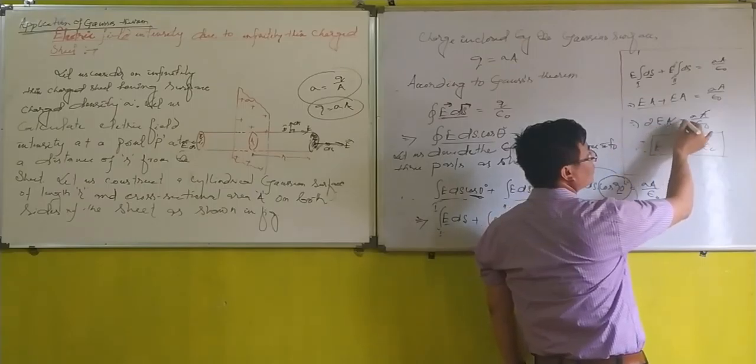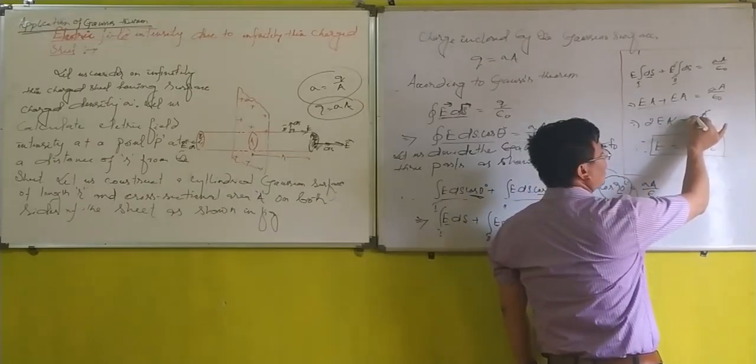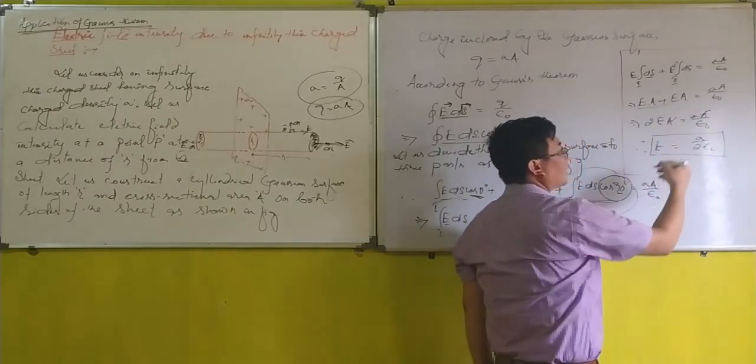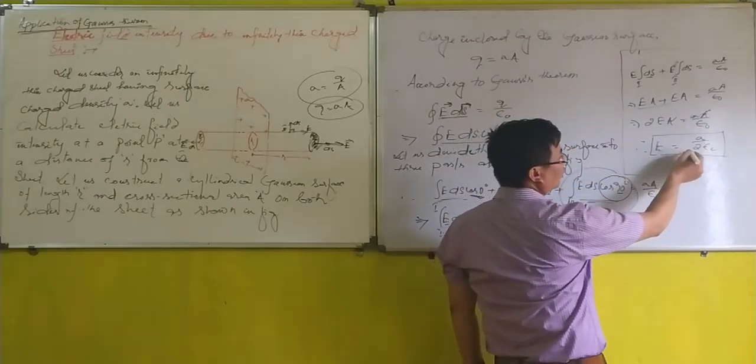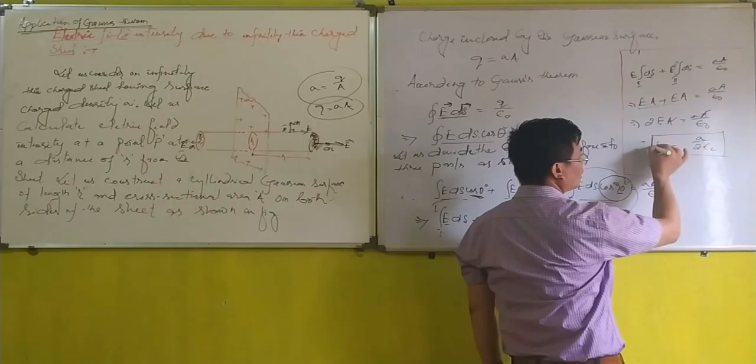2EA equals sigma A divided by epsilon naught. Therefore, E equals sigma divided by 2 epsilon naught.